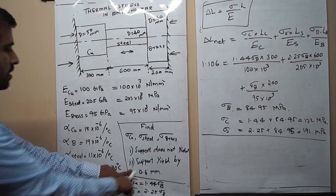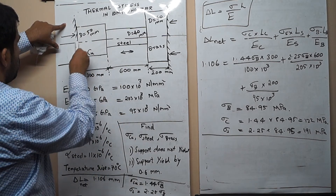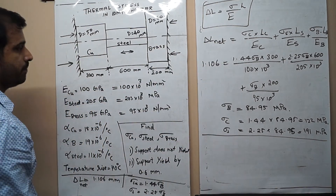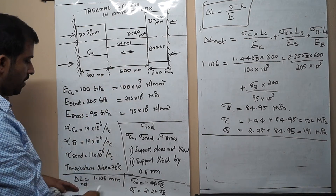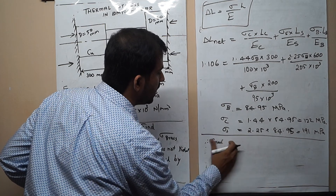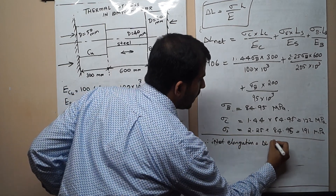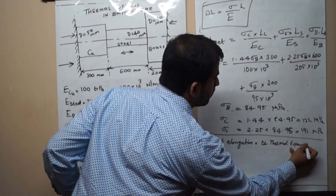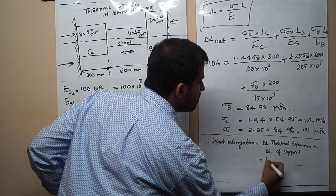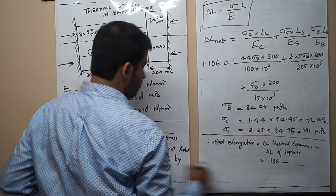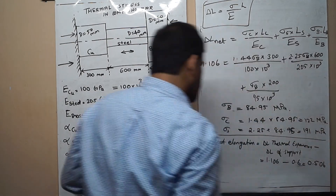Now for Case 2: the supports yield by 0.6 mm under thermal loading. The net elongation that must be suppressed is reduced because the supports themselves deform. Net elongation = thermal expansion elongation − support yield = 1.106 − 0.6 = 0.506 mm.